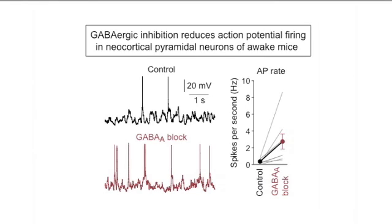Here you can see a membrane potential recording from a layer 2-3 pyramidal neuron in an awake behaving mouse. You can see large amplitude membrane potential fluctuations, and if you block GABAergic inhibition by drug application, action potential firing rates go up. Clearly GABA has an inhibitory action in the brain, and in order to understand how this GABAergic inhibition comes about, we clearly need to be able to record the activity of the GABAergic neurons.